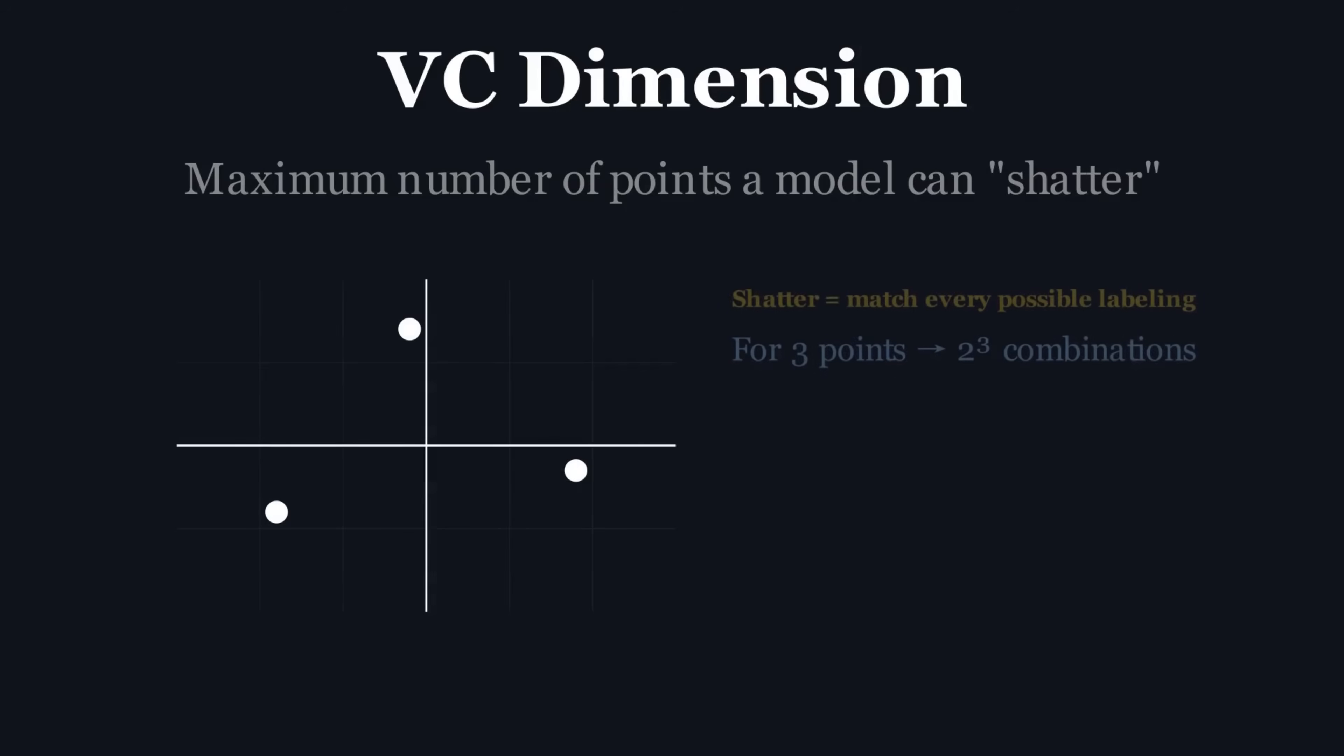The theory is called PAC learning, and at its heart is a way to measure the complexity, or power, of a learning model. This measure is called the Vapnik-Chervonenkis, or VC, dimension.